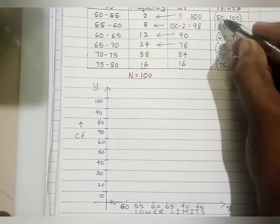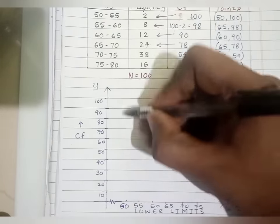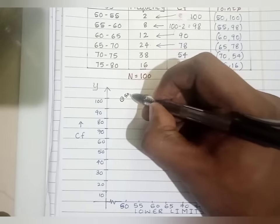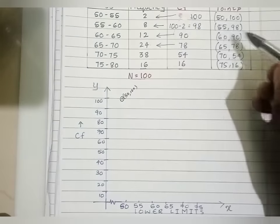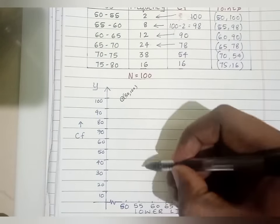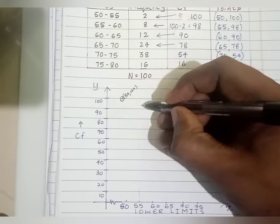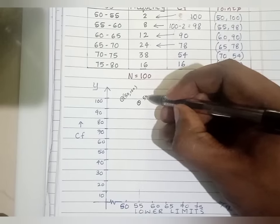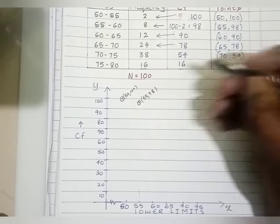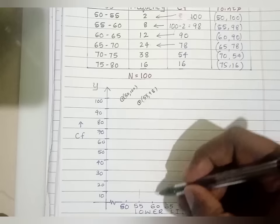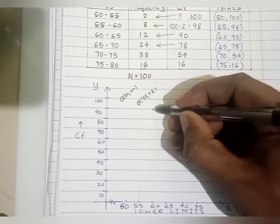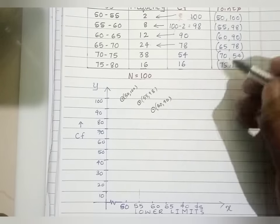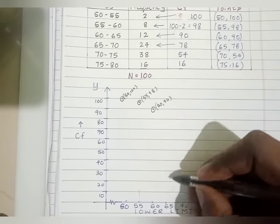Now plotting the points: for X=50, Y is 100. For X=55, Y is 98 — it is between 100 and 90. For X=60, Y is 90. For X=65, Y is 78 — it is between 70 and 80.